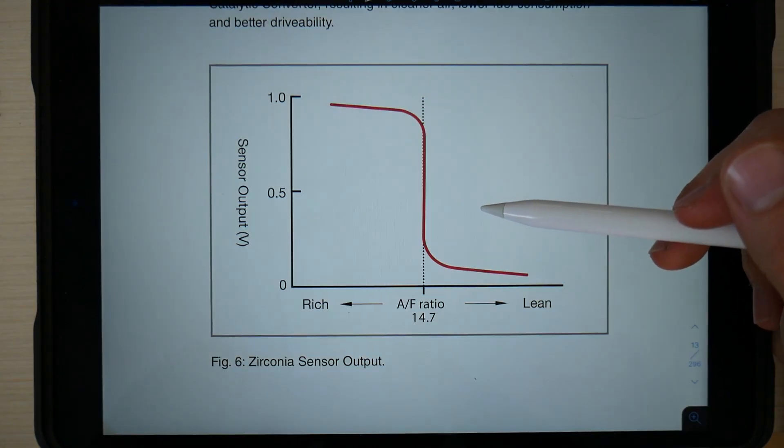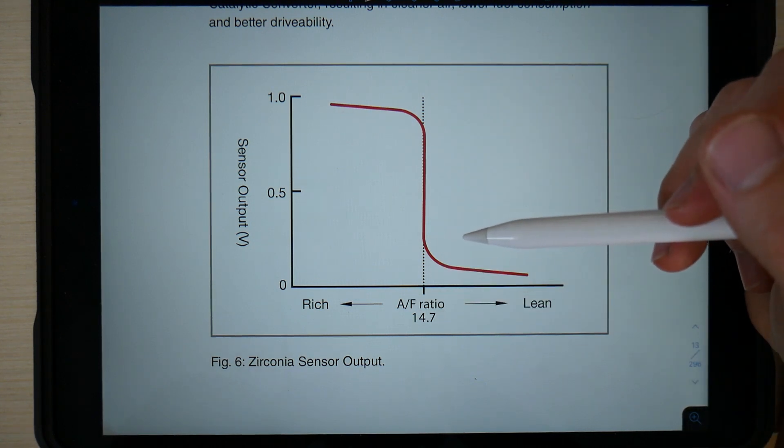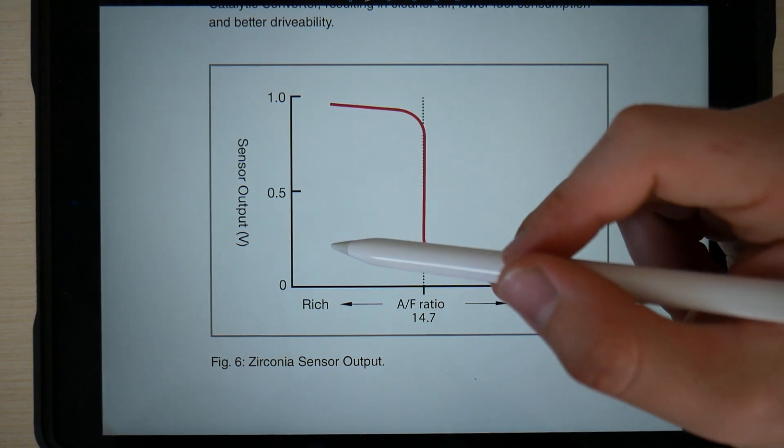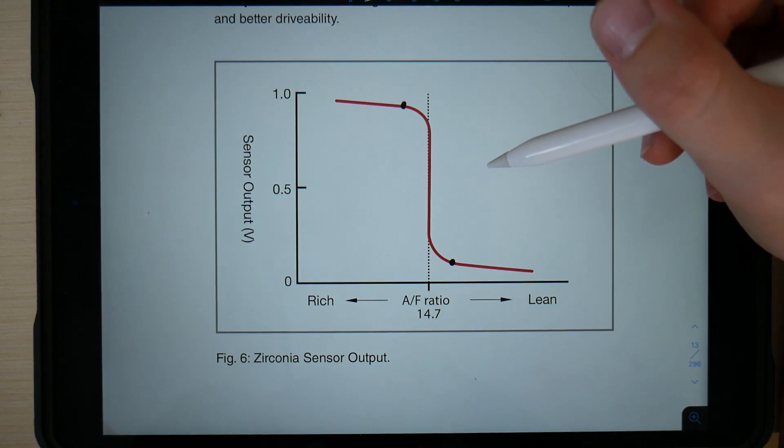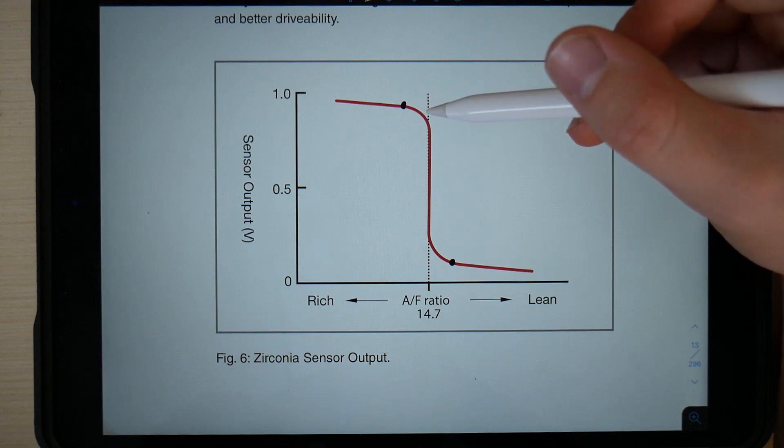Narrowband oxygen sensors are very good, but they are by no means perfect. This is a graph of the output of a narrowband oxygen sensor, with the sensor output in volts on the y-axis and the air-fuel ratio on the x-axis. The problem with this is the car doesn't know the exact air-fuel ratio of the exhaust. It just knows if it's too high or too low.